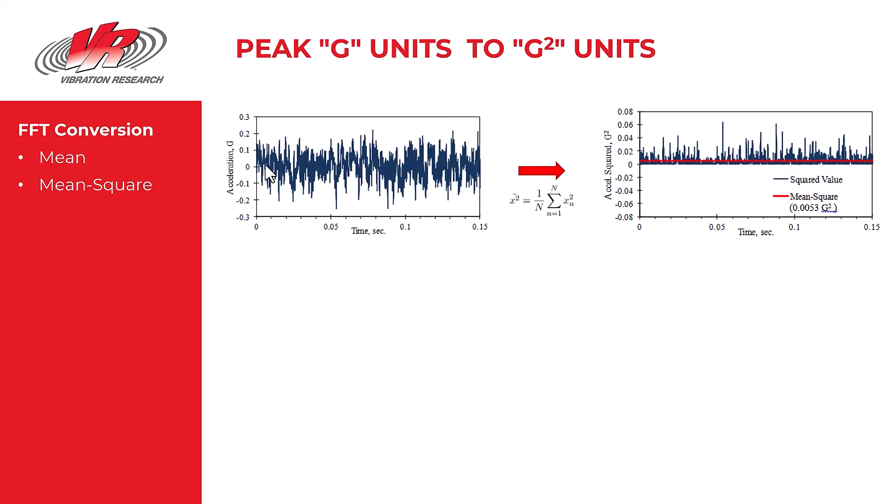So to calculate the average acceleration is essentially meaningless. Therefore engineers take each acceleration value in the time domain and square these values, making all the negative values to be positive. A negative times a negative is a positive value.